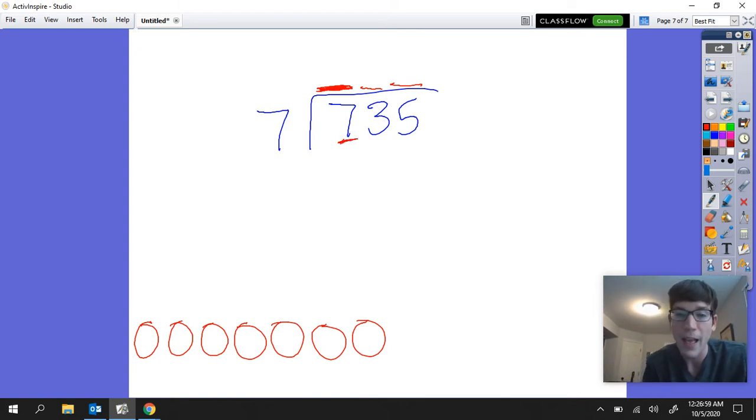Now the first thing that I notice when I see 735 divided by seven is I see my hundreds place here. So notice we have seven hundreds, remember that's in the hundreds place, and we are going to divide those seven hundreds into seven different groups. So the first question is do I have enough hundreds to put one into each group?